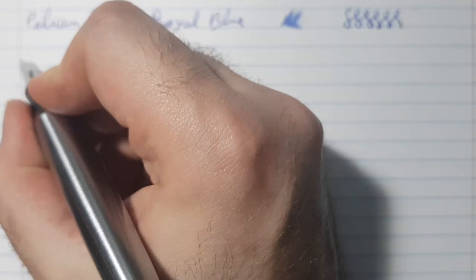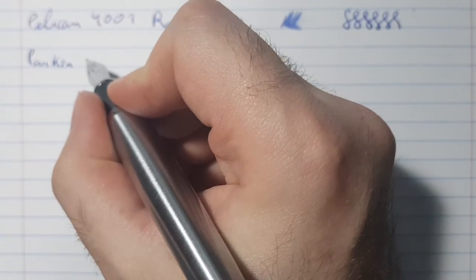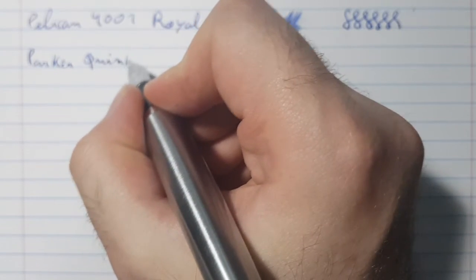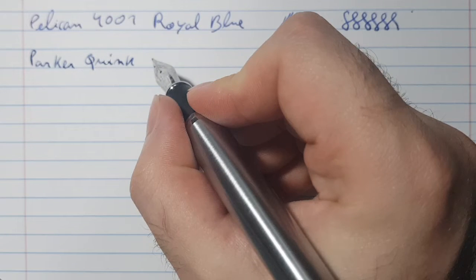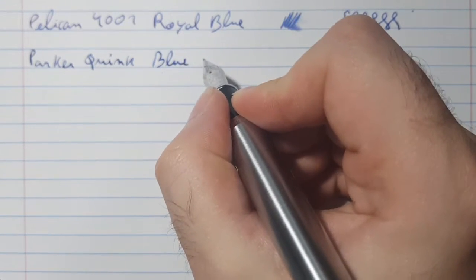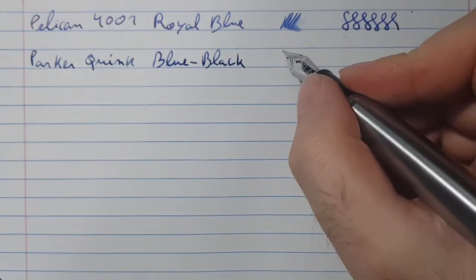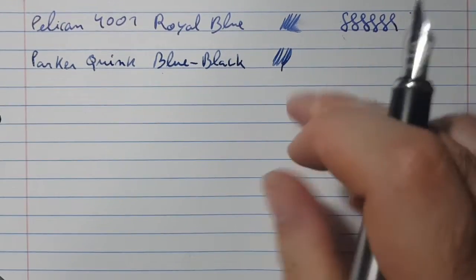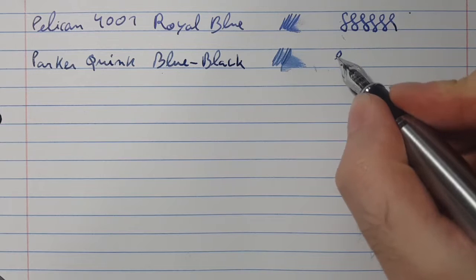Continuing, it's time for the Parker QUINK Blue-Black ink. This ink does take some time to dry out and it is darker than the Pelikan 4001 one.